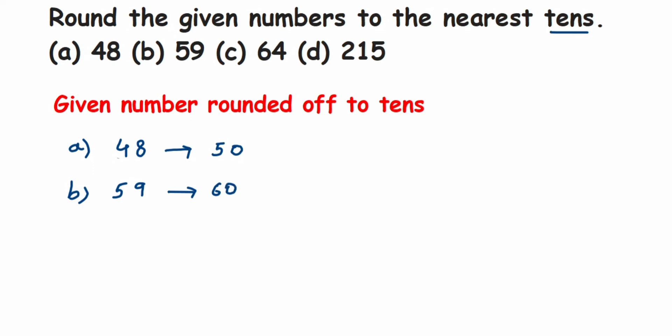Next we have 64. Again we check the number in the ones place — we have 4. Since 4 is less than 5, we don't add anything to the tens place digit, which is 6. Only if it is equal to 5 or greater than 5 do we add 1 to the tens digit. Since it's less than 5, the 6 remains 6 and the 4 becomes 0. So 64 rounds to 60.